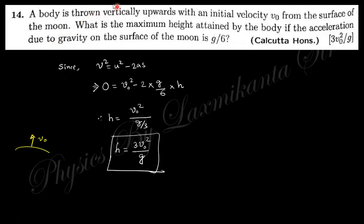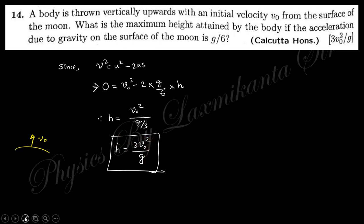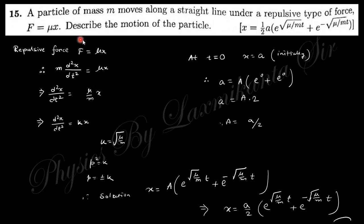Next question: a body is thrown vertically upward with initial velocity v-naught from the surface of the moon. What is the maximum height attained if the acceleration due to gravity there is g/6? Using v² = u² − 2as, at maximum height the final velocity is 0, initial velocity is v-naught, and acceleration is g/6. Solving gives the maximum height h = 3v-naught²/g.